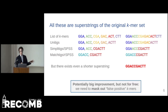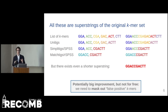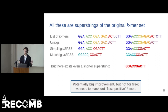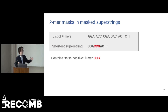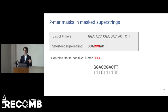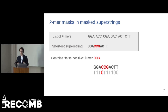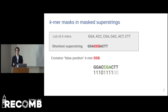If we want to represent the k-mers using this superstring, it's not for free, as it no longer holds that all k-mers which are substrings of this string are from the original set. In our example, we can see that the k-mer CCG is not from the original set, as there is a 0 at the corresponding place in the mask. But other k-mers such as CGA are from the set, as there is a 1 at the corresponding place in the mask.